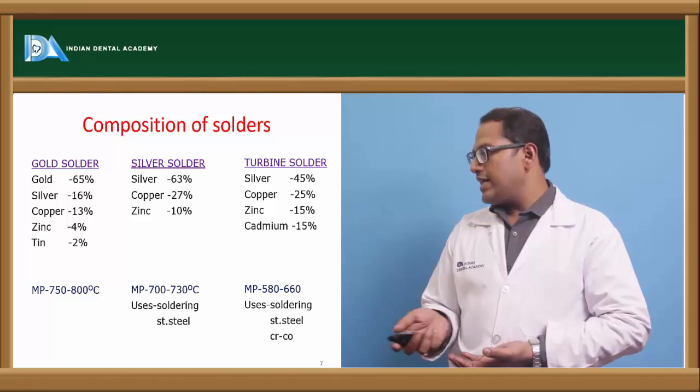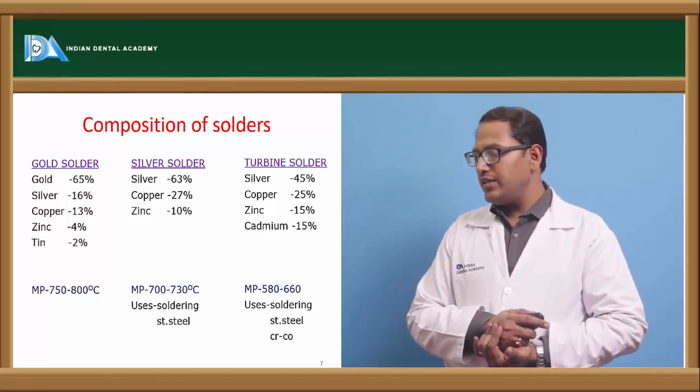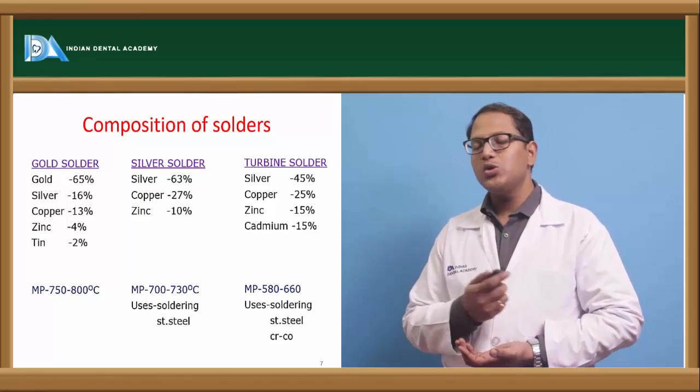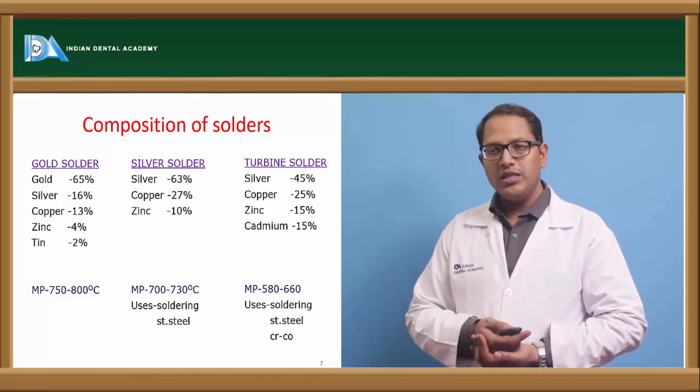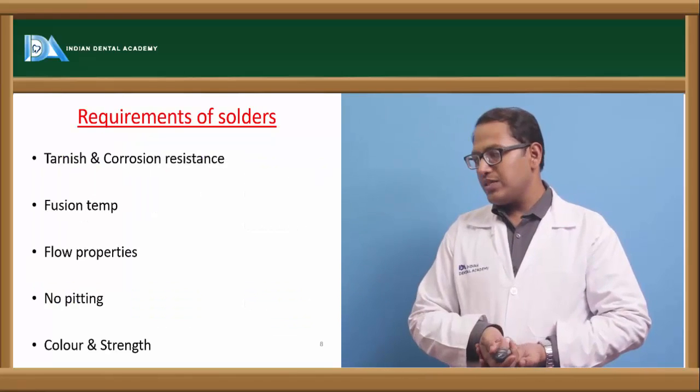Now for example, if the melting point is 700 to 730 degrees Celsius, it can be used to solder stainless steel. If the melting point is more than 660 degrees Celsius, it can be used as a cobalt chromium steel.